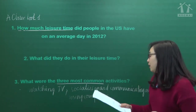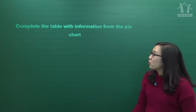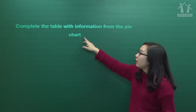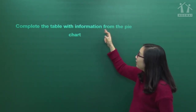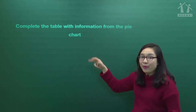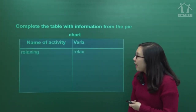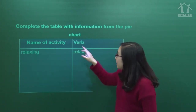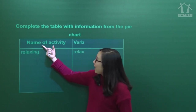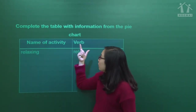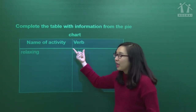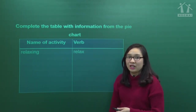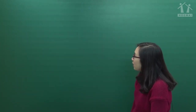Now we go to exercise number two. You have to complete the table with the information from the pie chart - các bạn sẽ phải hoàn thành cái bảng với thông tin từ pie chart - biểu đồ hình tròn. We have two columns: the first column is the name of activity, the second column is the verb - cột thứ hai chúng ta tìm ra động từ nguyên thể của các hoạt động đó.